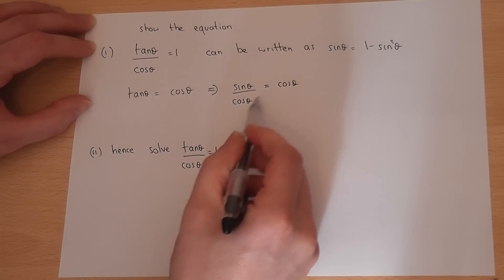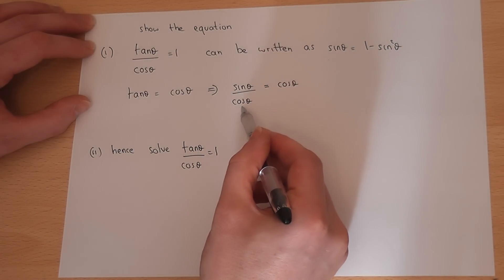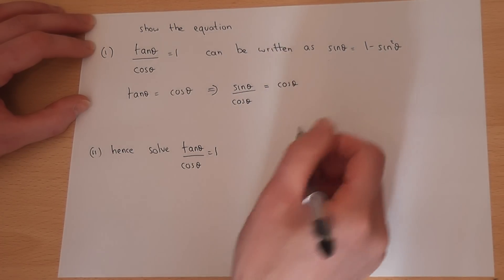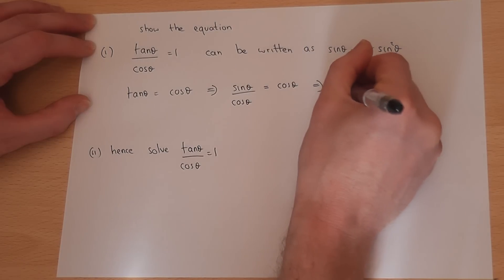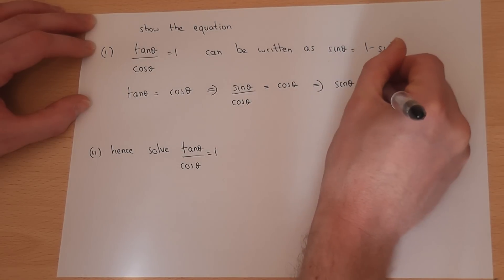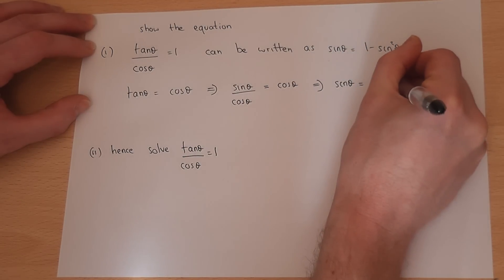Tan equals cos. If I multiply by cos theta again, so cross-multiply, I get sine theta equals cos squared theta.